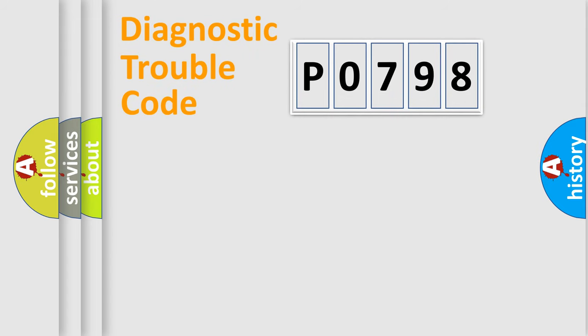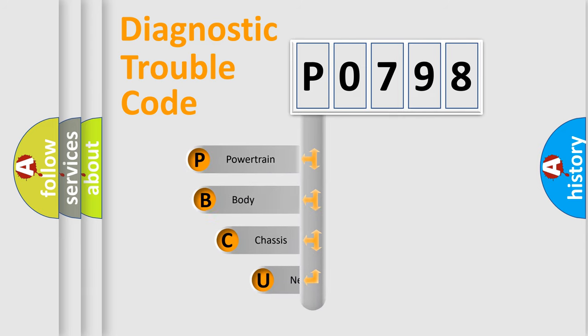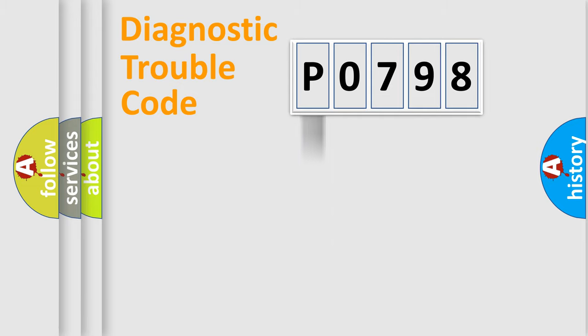Let's do this. First, let's look at the history of diagnostic fault code composition according to the OBD2 protocol, which is unified for all automakers since 2000. We divide the electric system of an automobile into four basic units: Powertrain, Body, Chassis, and Network.